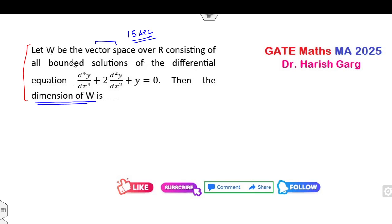W is the vector space over R consisting of all bounded solutions. The most important thing is you have to consider only the bounded solutions. Now you have to find the dimension of this.